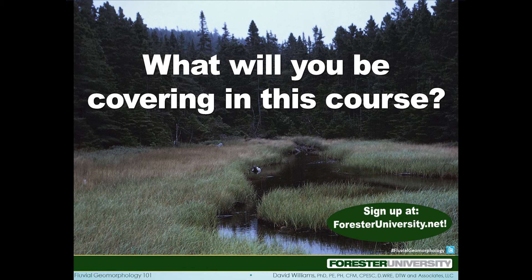We'll talk about watershed zones — upper, middle, and lower zones — and what happens in each of those zones of a watershed. We'll talk a little bit about the evolution of a channel in terms of how it changes its shape over time and in space. Channel stability and instability is next, which covers how channels can have banks that are failing, what's causing the failures, and how we can possibly fix them.